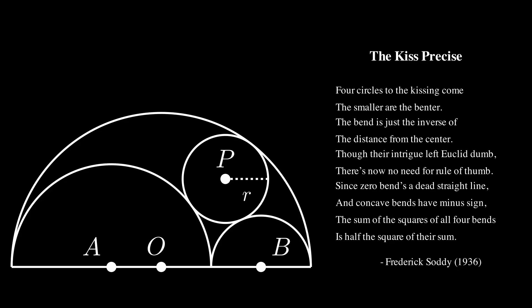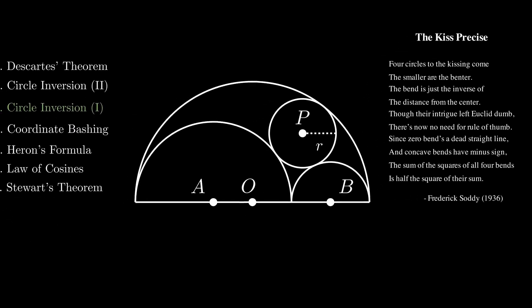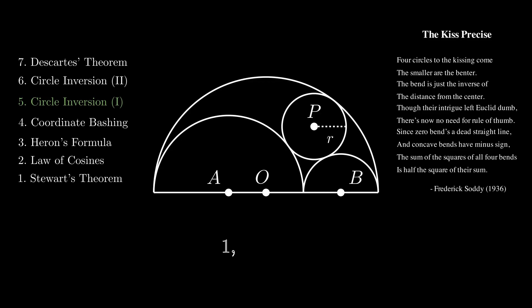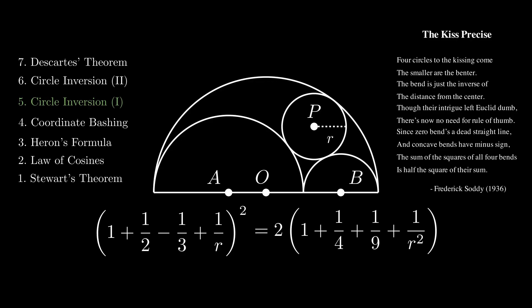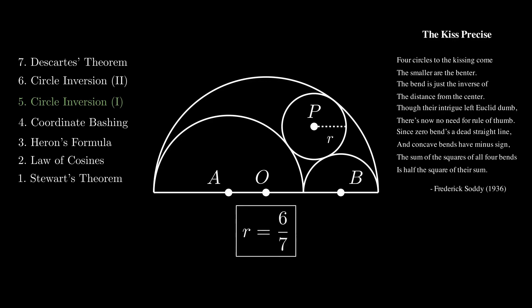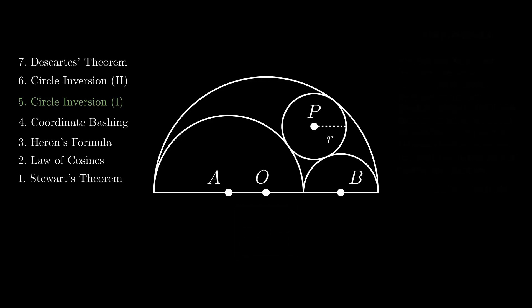Let's unpack this a little bit. We have four mutually tangent circles all touching each other, with these curvatures which is just the inverse of their radius. Note that the larger circle is given a negative curvature because it is concave, or exterior, to the other three circles. If we plug these values for the curvatures into the equation suggested by the poem, we should find that the radius r is six over seven. We'll now show this using circle inversion.